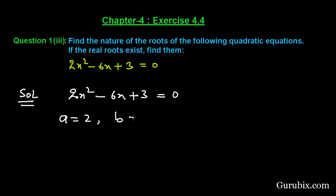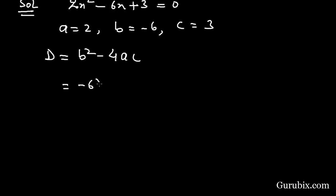Now we shall calculate the discriminant, that is D = b² - 4ac. B is -6, so we shall find the square of -6. Here we have -4, a is 2, and c is 3.